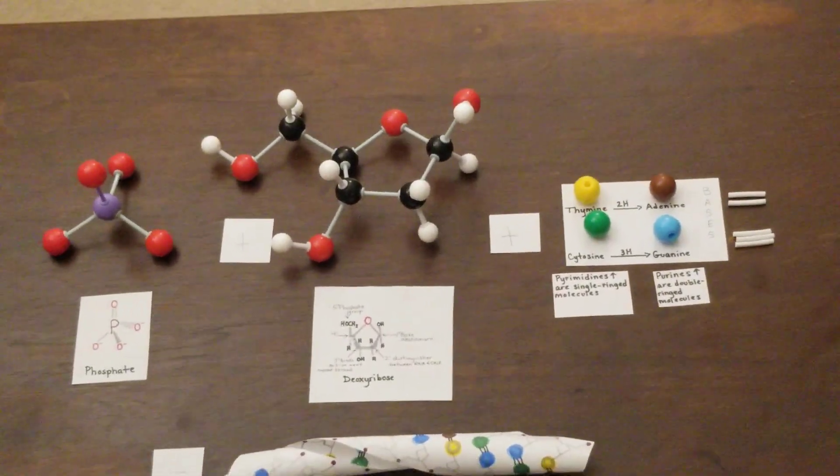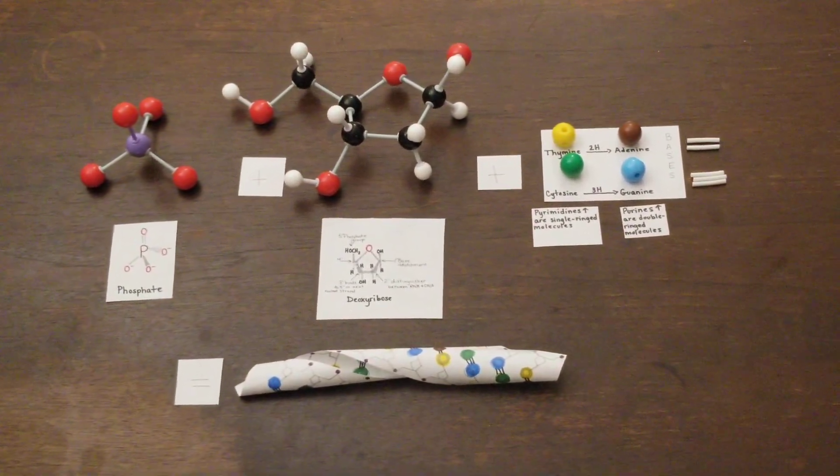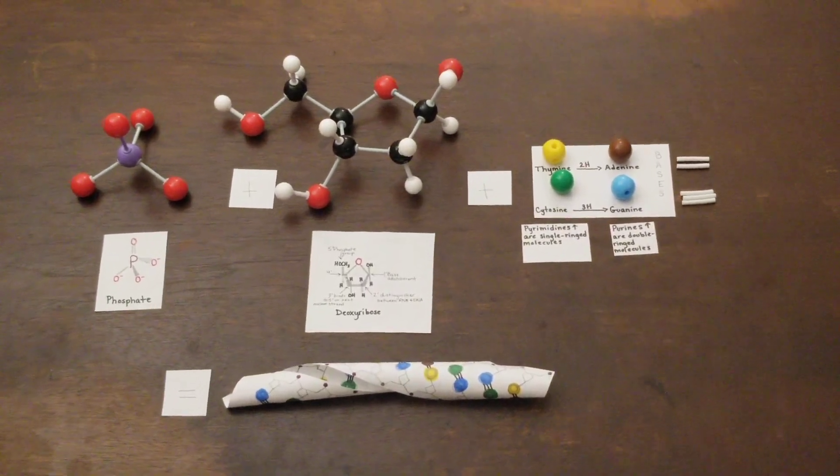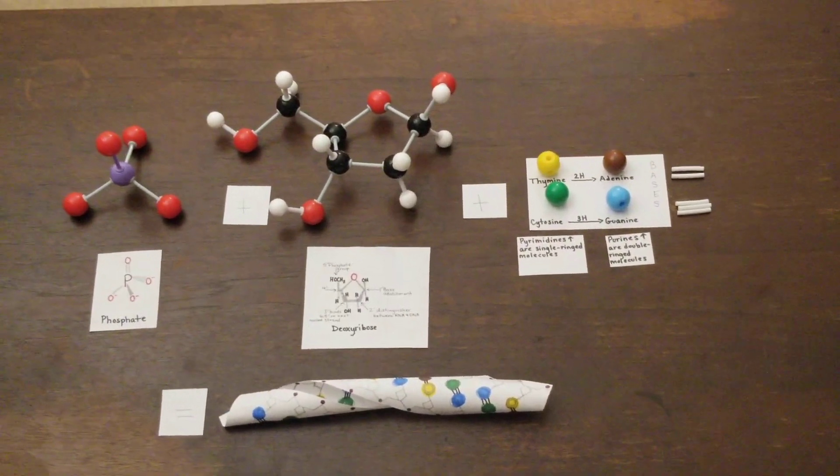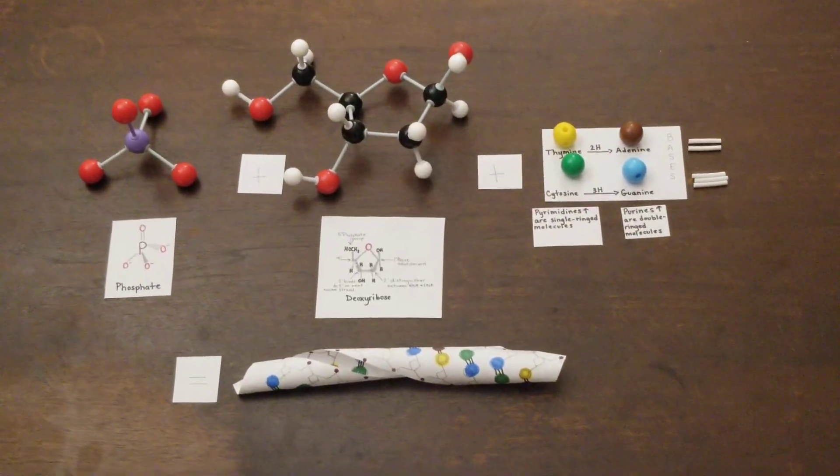The base stacking created from the orientation of the anti-parallel strands, complementary base pairs, and hydrophobic nature of the bases is what stabilizes the DNA from the destabilizing forces of the hydrophilic phosphate backbone and torsion.